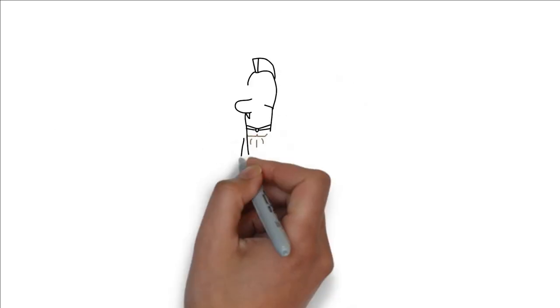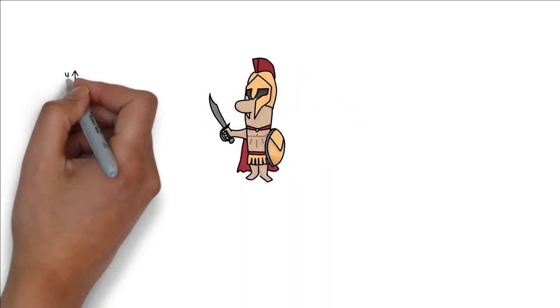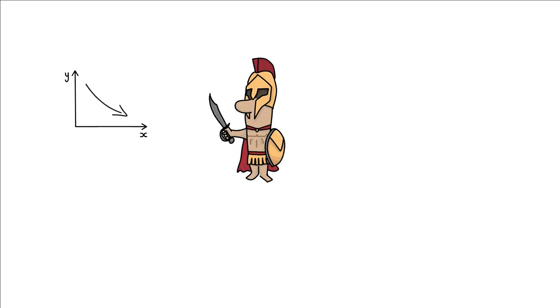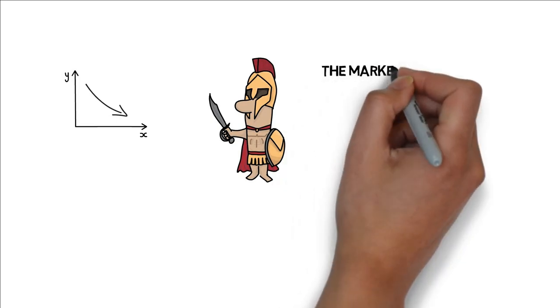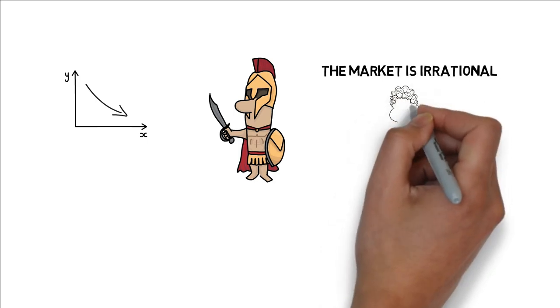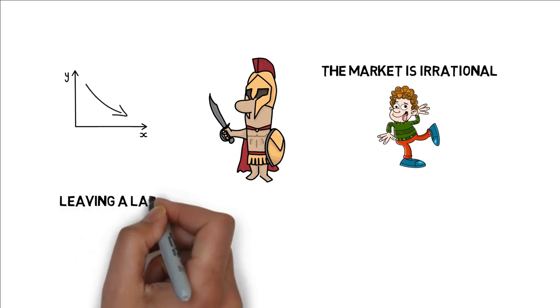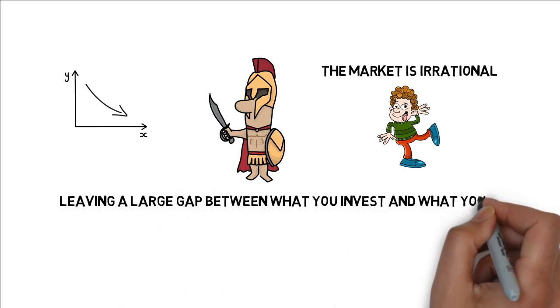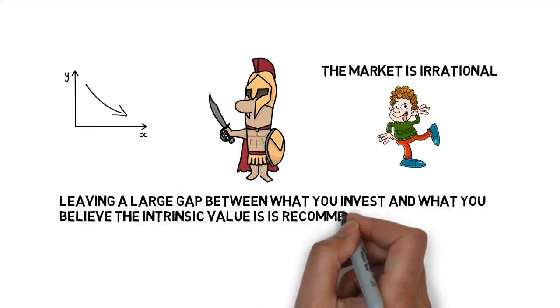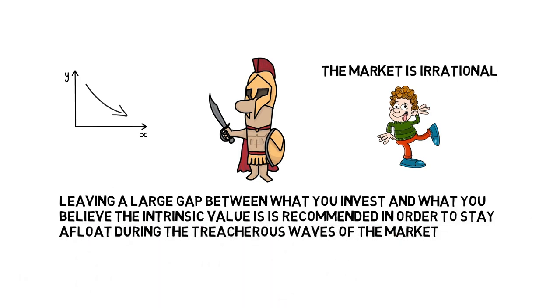The margin of safety refers to the built-in cushion for any downside risk in an investment. As established with the Mr. Market analogy, the market is irrational and can stay irrational for long periods of time, leaving a large gap between what you invest and what you believe the intrinsic value is recommended in order to stay afloat during the treacherous waves of the market.